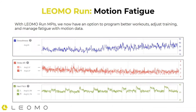Enter LEOMO RUN MPIs. We now have an option to program better workouts, adjust training, and manage biomechanical stress using motion data. Here are three quick examples of various workouts and the MPI responses: smoothness on a steady tempo showing a gradual increase toward the end, strike angular range showing a gradual decline as the workout progresses, and heel pitch during an interval workout slowly getting higher as the intervals go on. Remember, for heel pitch, lower percentage is better.